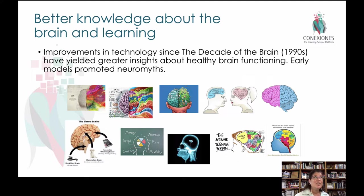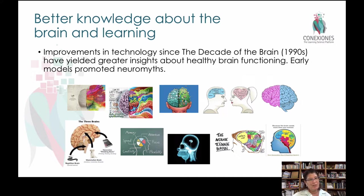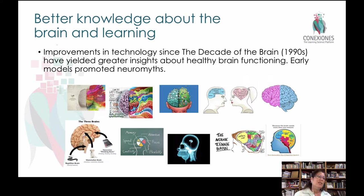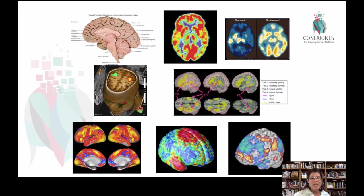Myths cause teachers to treat students in different ways. If we think men and women's brains are different, we treat them differently. If we think somebody is very right-brained and I'm a very left-brained teacher, we treat them differently. If we think learning is compartmentalized in the brain, we choose different types of instructional modalities. So what we have to do is get rid of these neuromyths and then understand what good information exists about the brain.